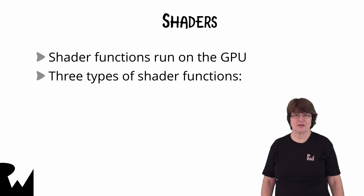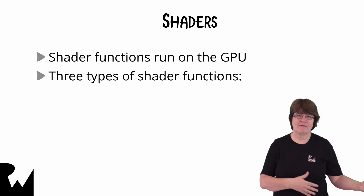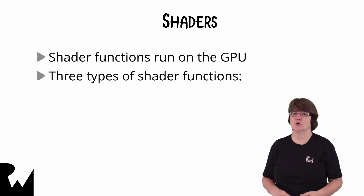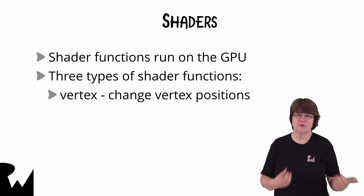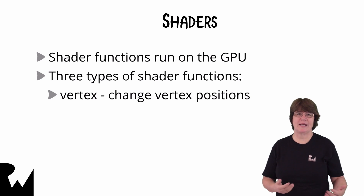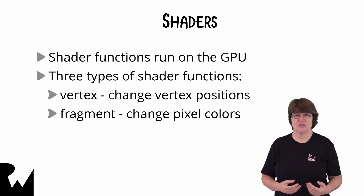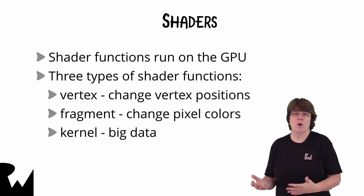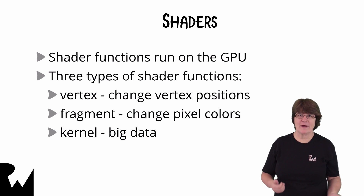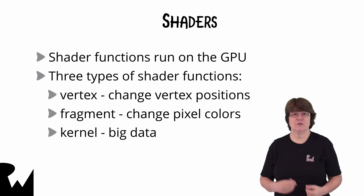There are three types of shader functions. We use two of the types of shader function in the graphics pipeline which we've already briefly looked at. Firstly the vertex function, where we can manipulate the vertices just as we did when animating the quad. The second is the fragment function where we can manipulate pixel colours. The kernel function is used for parallel programming and operates on a grid or an array of data. We're just going to be using the graphics functions: vertex and fragment.